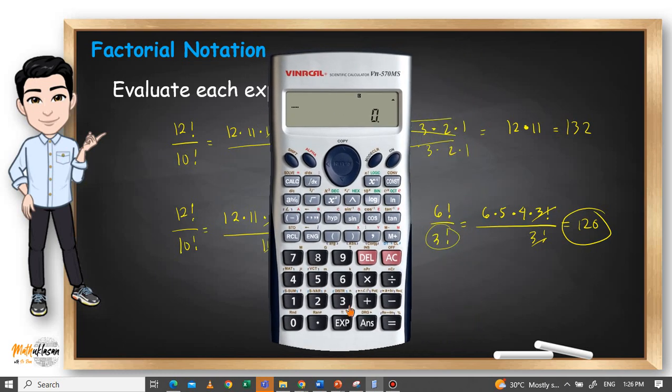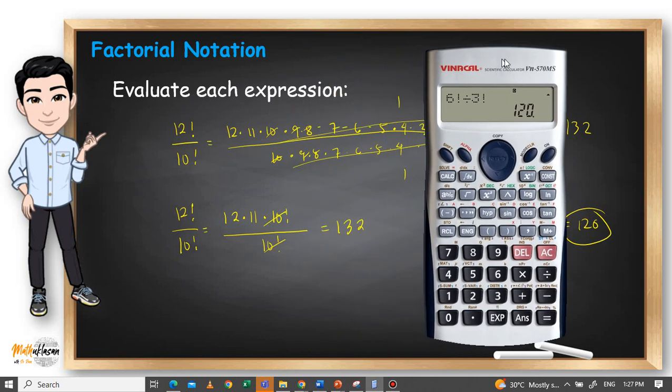Let's check another example now. How about we have 6 factorial divided by 3 factorial? So we have the correct answer a while ago, which is also equal to 120.